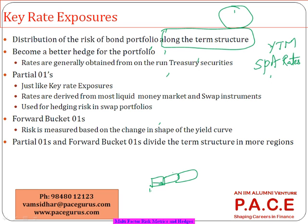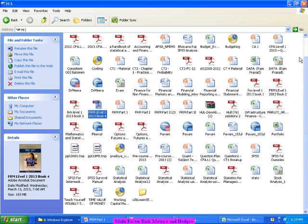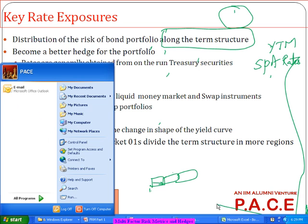If the two-year interest rate is changing, and we assume that the five-year, ten-year, and eight-year interest rates are not changing — only the two-year interest rate is changing — what would be the impact on the price of the bond? So I am not looking at the entire YTM changing by 0.5 percent; I am only looking at the two-year spot rate changing by 0.5 percent and no other spot rate changing at all. Whatever is the resulting change in the price of the bond, that is the key rate duration.